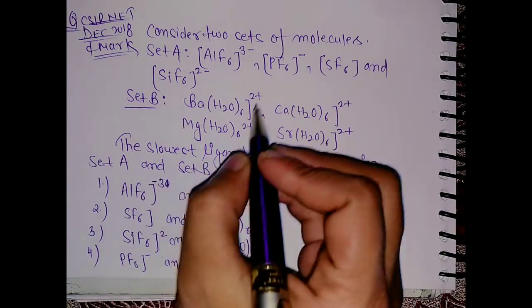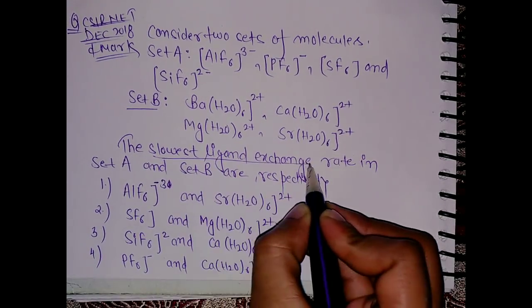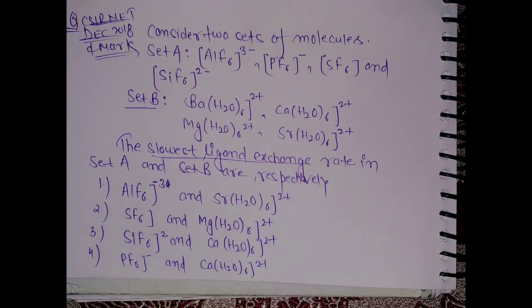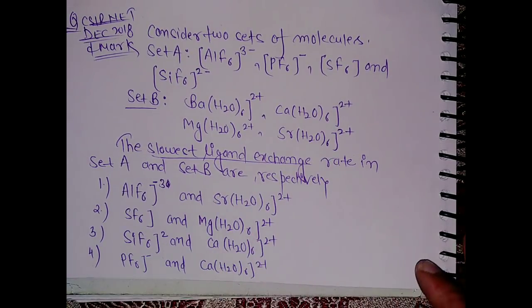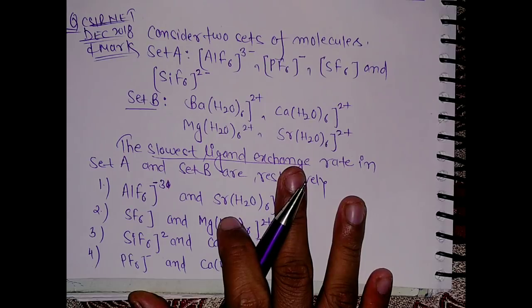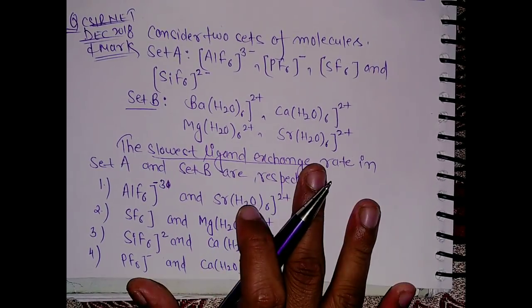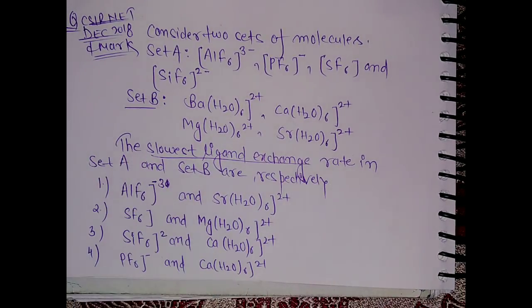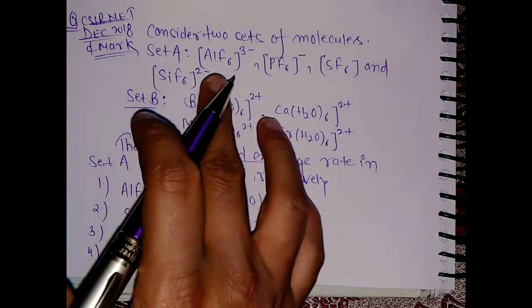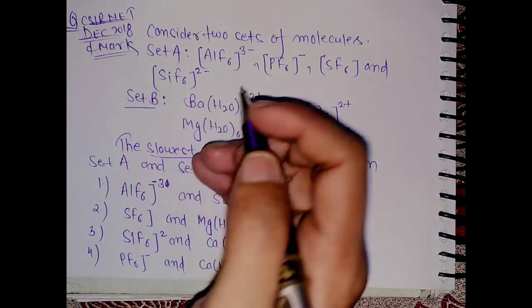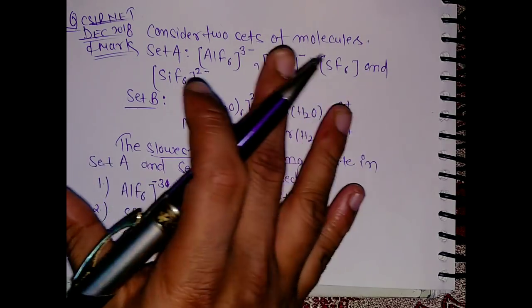You have to tell which will show the slowest ligand exchange in Set A as well as in Set B. It is a very easy question which is based on the Z effective, the force of attraction between the metal and the ligand. Same goes for Set A, so what you have to do is first of all whenever you see these types of questions, just calculate the oxidation state.